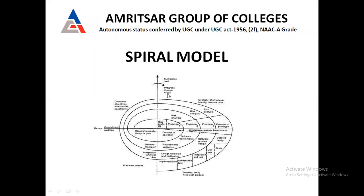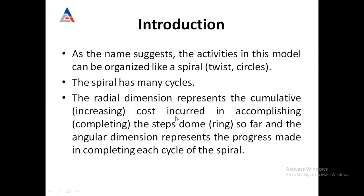The cost of the software is directly proportional to the number of spirals. If there are fewer spirals, the cost will be less; if there are more spirals, the cost will definitely be more. There are four quadrants in the model. As the name suggests, the activities in this model can be organized like a spiral or circle.